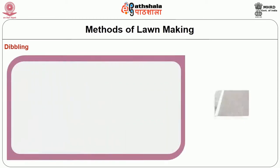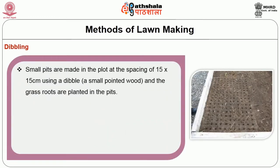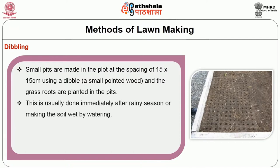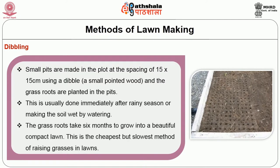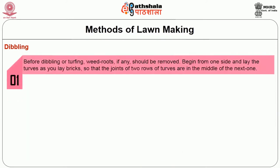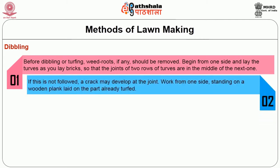Then next is dibbling. Small pits are made in the plot at a spacing of 15 x 15 cm using a dibble, that is a small pointed wood, and the grass roots are planted in the pits. This is usually done immediately after the rainy season or after making the soil wet by watering. The grass roots take 6 months to grow into a beautiful compact lawn. This is the cheapest but slowest method of raising grasses in lawn. Before dibbling or turfing, weed roots if any should be removed.